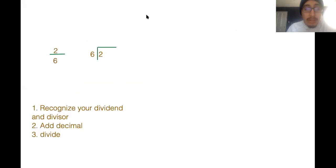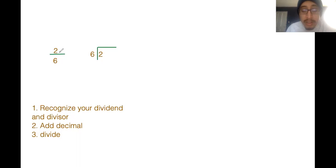So here we go, I already have it right here. So first step is recognize your dividend and divisor. Your dividend is the number that is getting divided. Your divisor is the number you are using to divide. Fractions are always going to be looking like this — two over six.